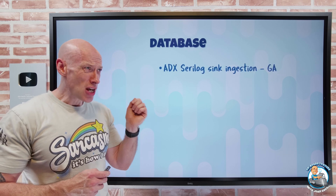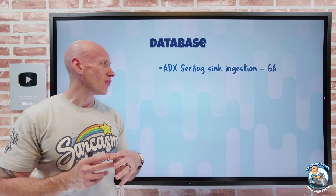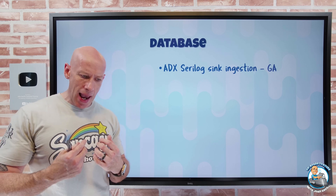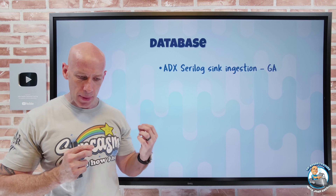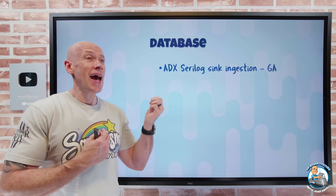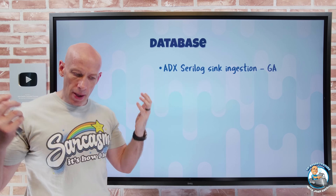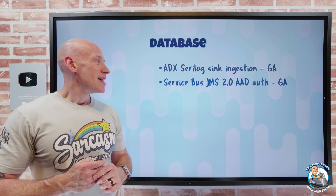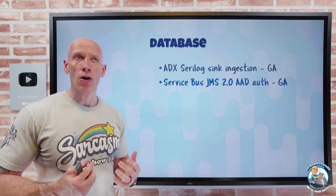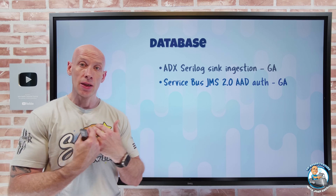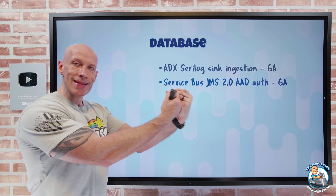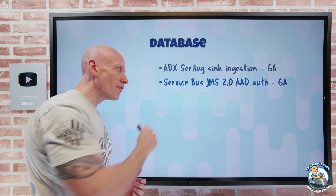On the database side, Azure Data Explorer — the large-scale data ingestion and analysis service — now has Serilog sink ingestion. Serilog is a popular logging framework for .NET applications that lets developers control exactly which log statements are output; it's designed for structured event data. Now I can take ingestion directly from that Serilog sink into Azure Data Explorer. In Service Bus, Azure AD-based authentication is now supported with JMS 2.0, meaning services running in Azure with a managed identity can integrate using their native token — no secret management needed.